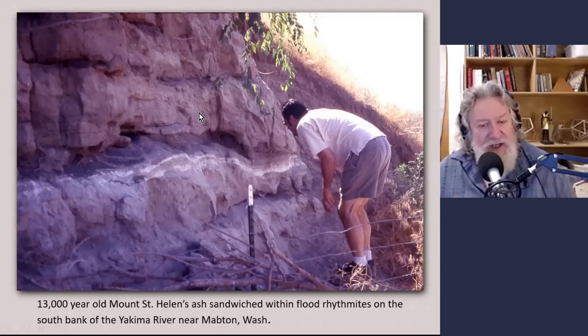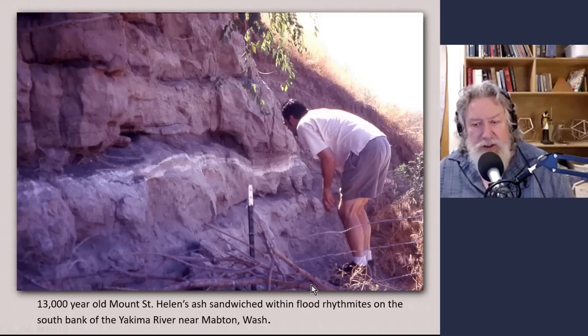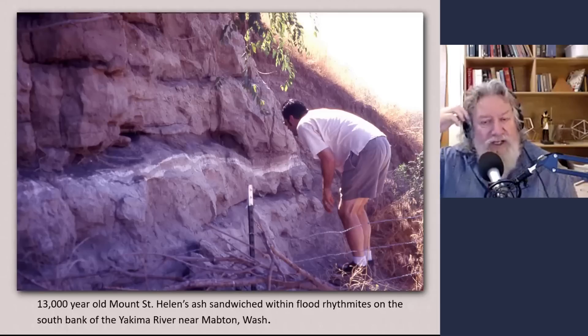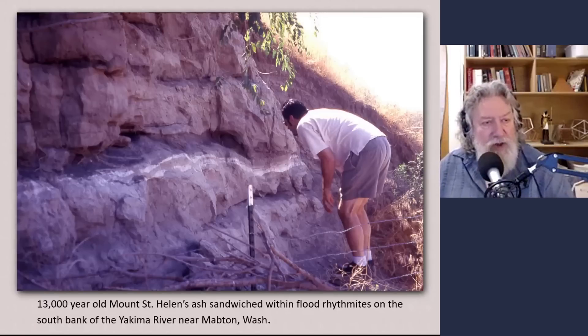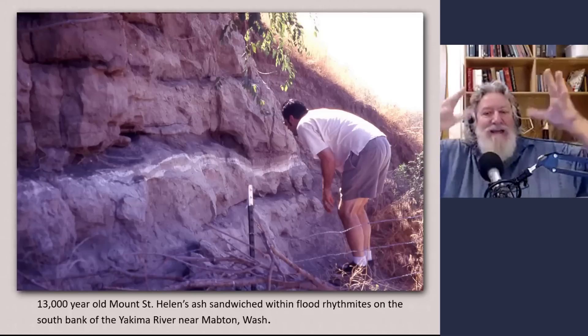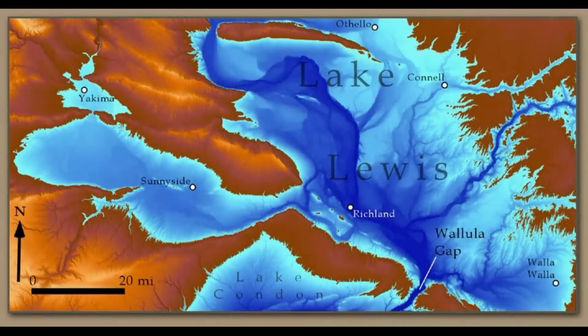These are back-flood sediments. Let me move this out of the way - flood rhythmites on the south bank of the Yakima River near Mabton, Washington. This is very close to the limit of the back-floods, so this is a fairly low-energy depositional environment. The picture is that there's a main valley and a sediment-laden flood is rushing down through this valley, but there are tributaries. As the main flood comes down the trunk channel it will back-flood up into the tributaries, reaching an elevation roughly equivalent to the highest peak level of the flood in the main trunk valley.